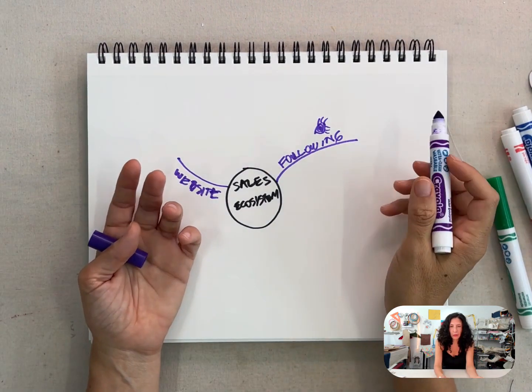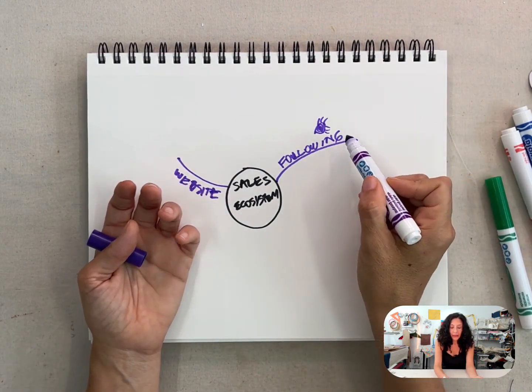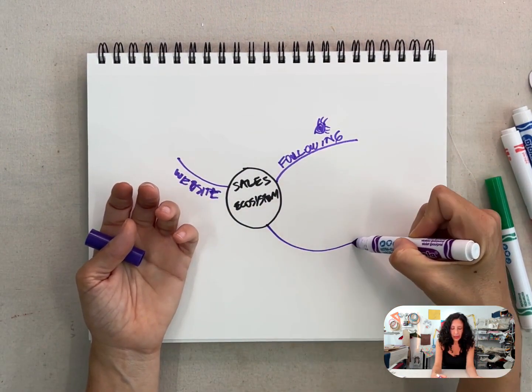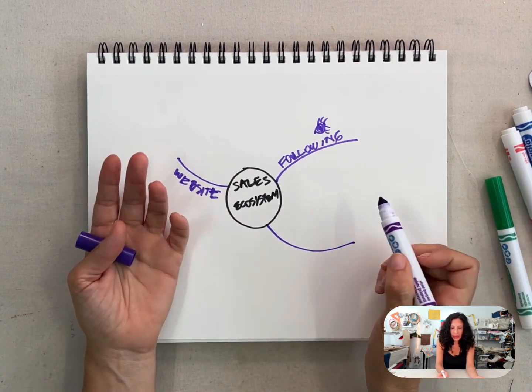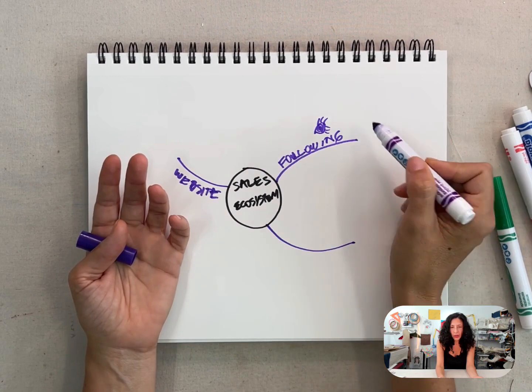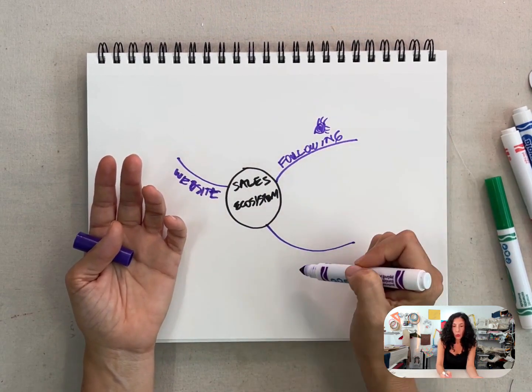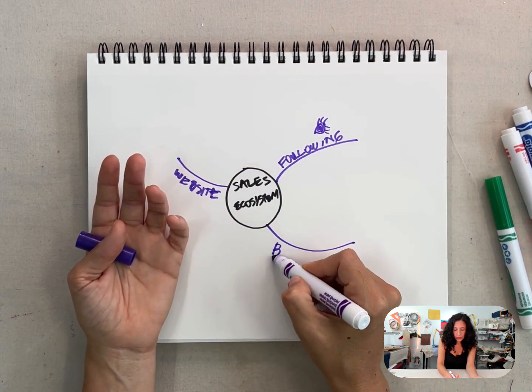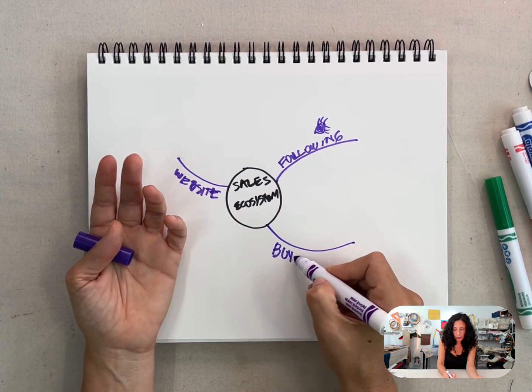So we have to have this third thing here, which is the buyers, right? And the buyers come from, so what I'm saying is part of this group here will be your buyers. So we call them buyers, online buyers.